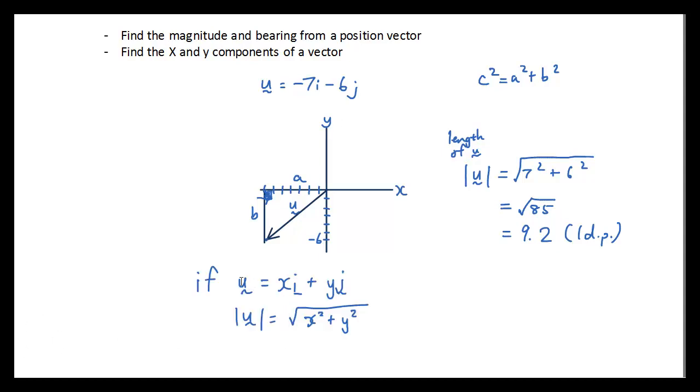So the general formula is, if vector u is equal to x times unit vector i plus y times unit vector j, then the magnitude of u, or the length of vector u, is equal to the square root of x squared plus y squared.